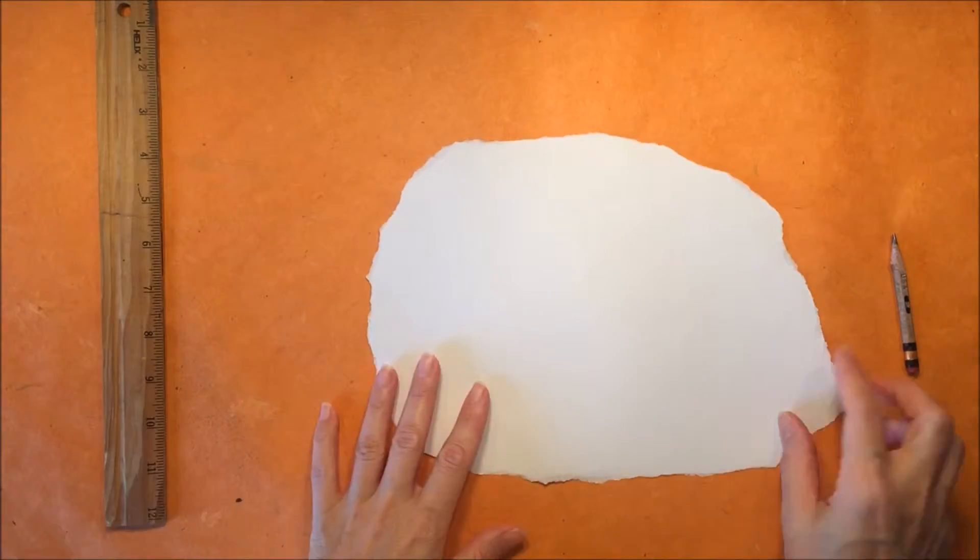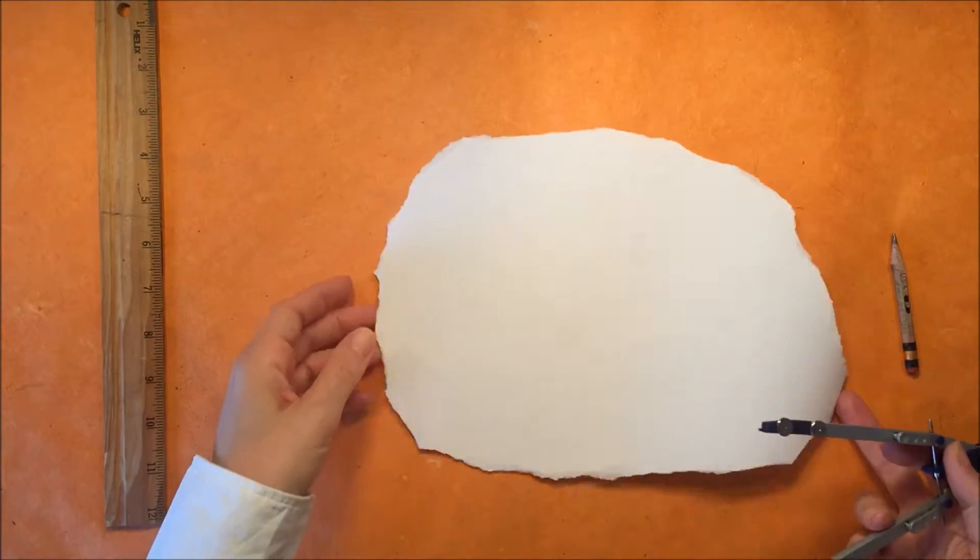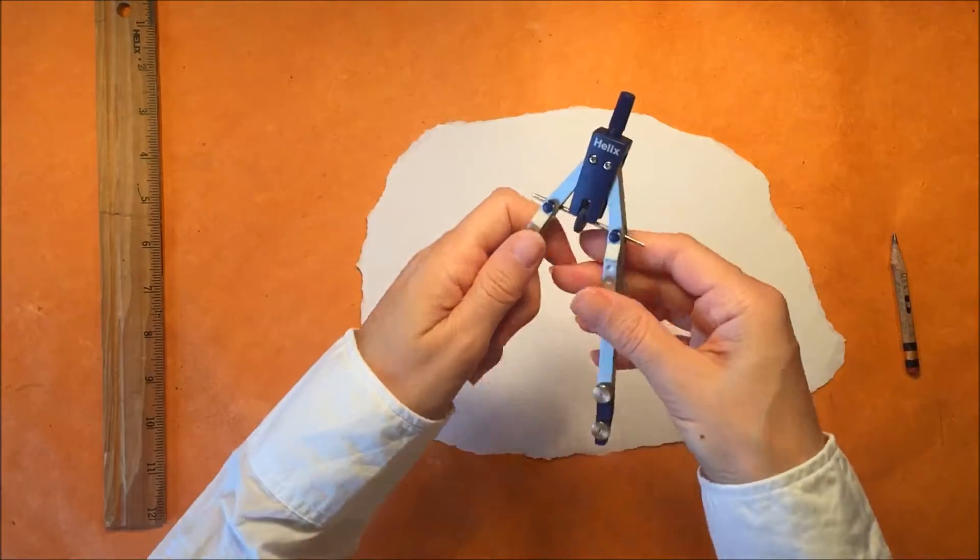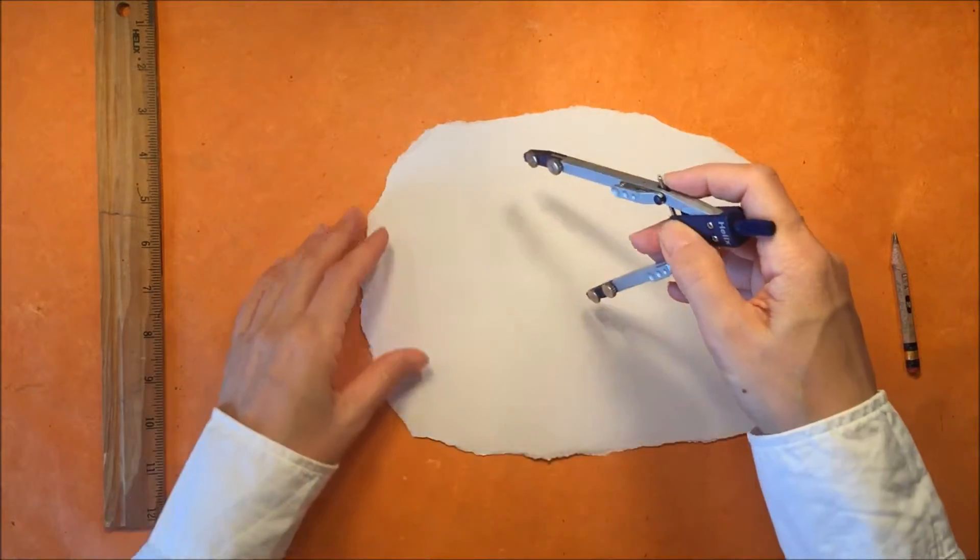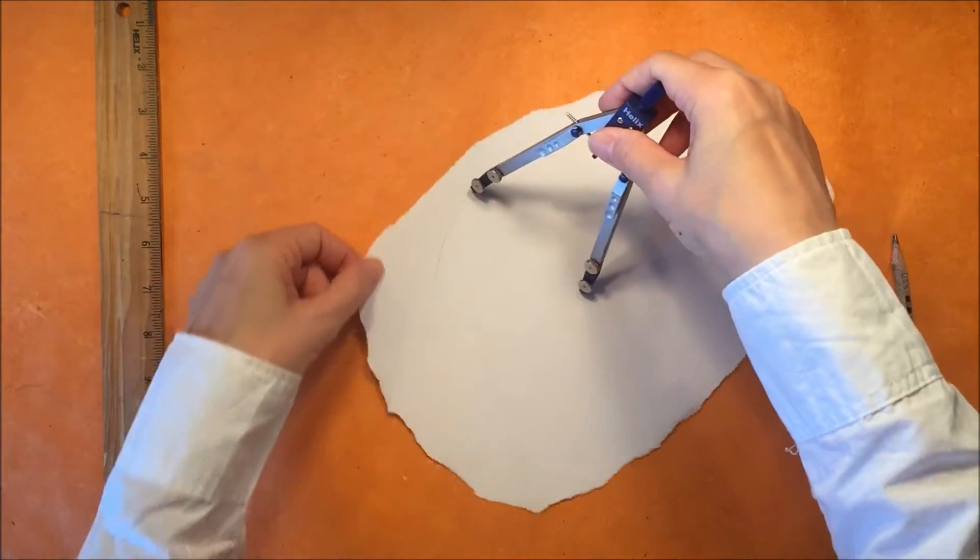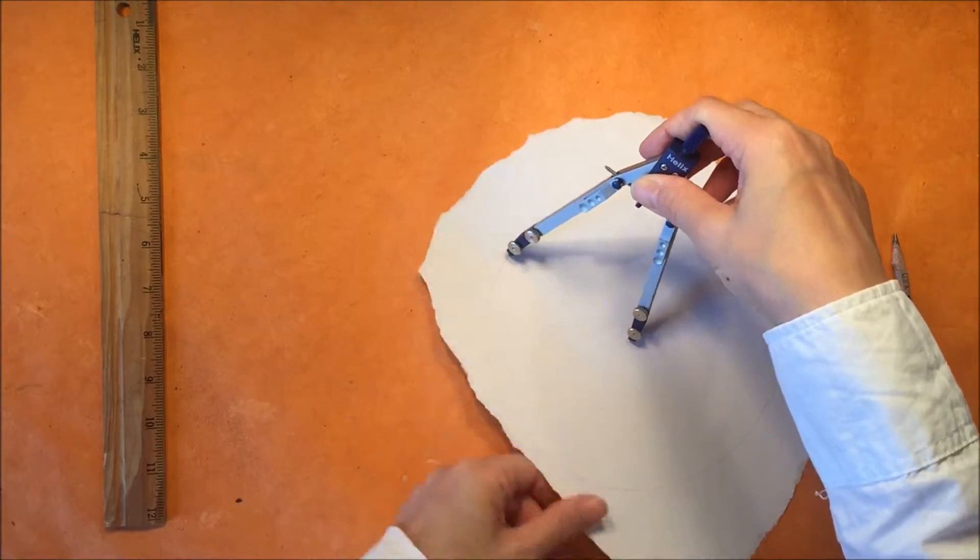But suppose you didn't have a piece of paper that had square corners or you were working on a piece of parchment or in the sand the way that Pythagoras was probably doing, you would need to construct a square before you could prove that a squared plus b squared equals c squared.